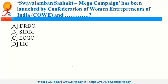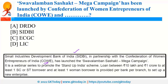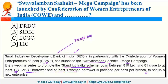The Swab Lumban Shashakt Mega Campaign has been launched by the Confederation of Women Entrepreneurs of India (COWE) in association with SIDBI — Small Industries Development Bank of India. This campaign was launched to promote the Stand Up India scheme, under which loans are provided to set up new enterprises, targeting at least one SC/ST borrower and at least one woman borrower. SIDBI is also the implementation authority for PM Svanidhi scheme, which is a scheme for street vendors under the Ministry of Housing and Urban Affairs.